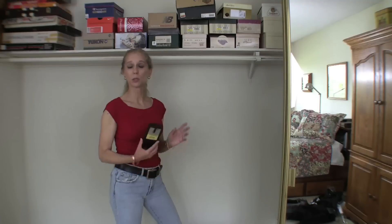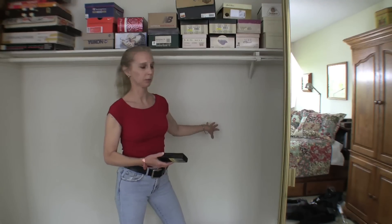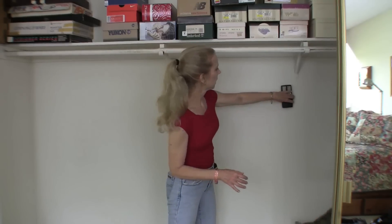The first thing we have to do is find where our studs are. You also want to make sure there's no electrical or plumbing behind your wall. There's two ways to do that. We can use a stud finder which you can get at any hardware store, and when you have a stud, the lights light up.